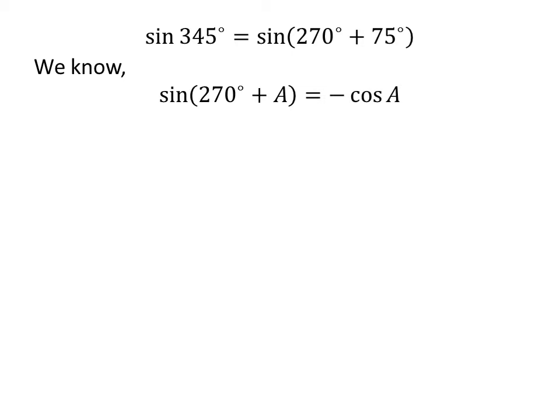We know the trigonometric identity: sine of 270 degrees plus A is equal to minus cosine of A. The proof of this identity is explained in the video appearing in the upper right corner, and the link is also given in the description. So, sine of 345 degrees is equal to minus cosine of 75 degrees.